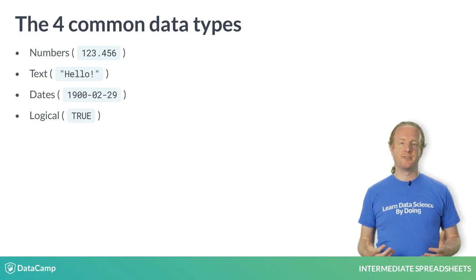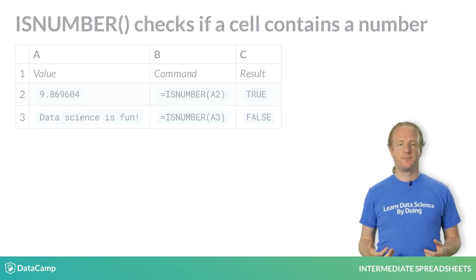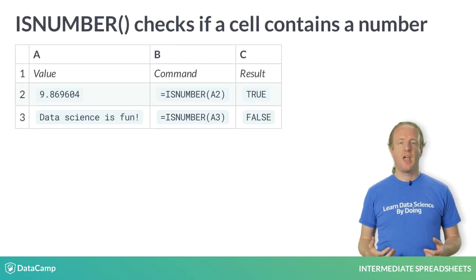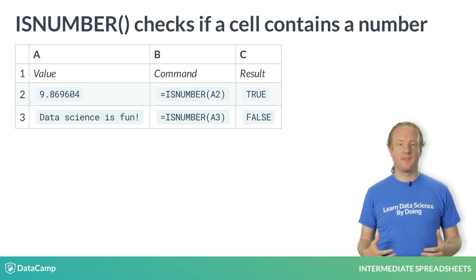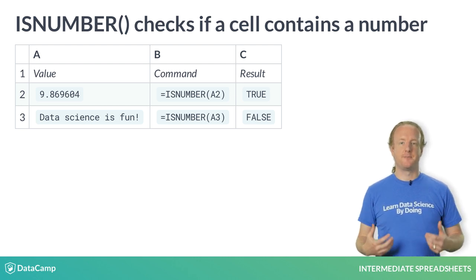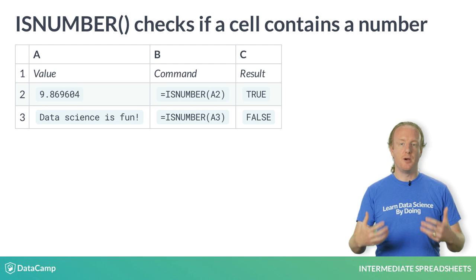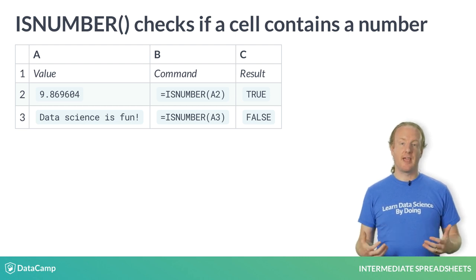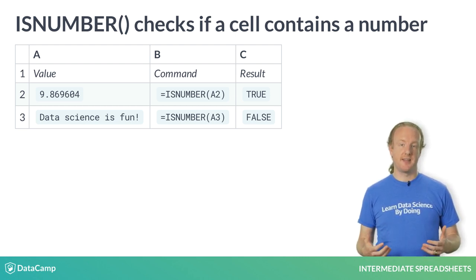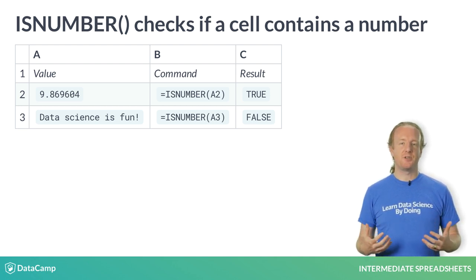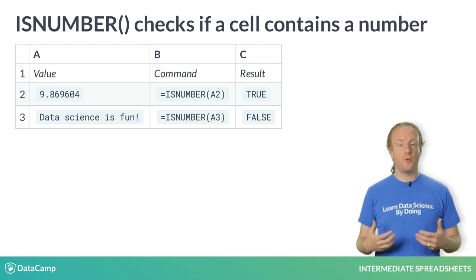Logical data contains true and false values. You can test for different types of data using functions that begin with IS. For example, isNumber takes a cell location as an input and returns true if that cell contains a number, and false otherwise. This allows you to be sure that your cells contain the type of data that you thought they did.